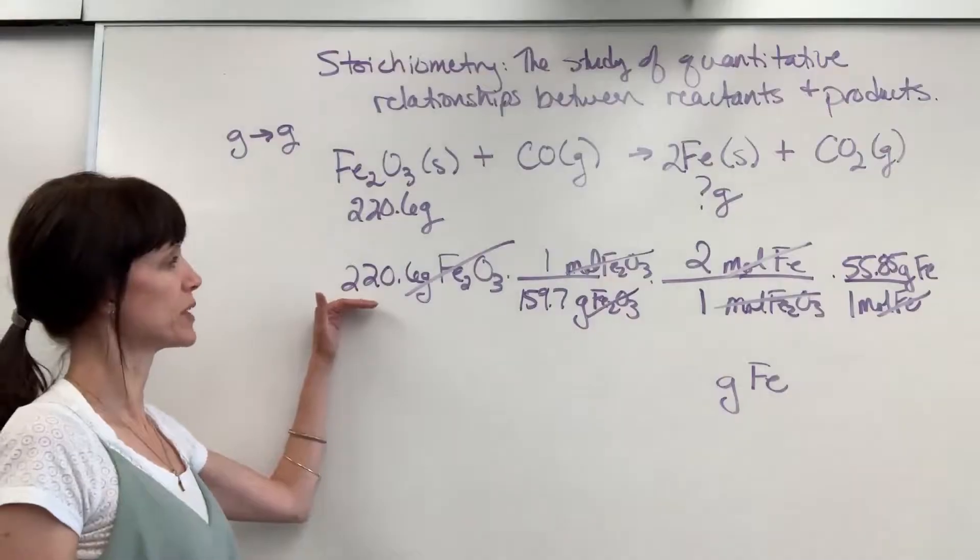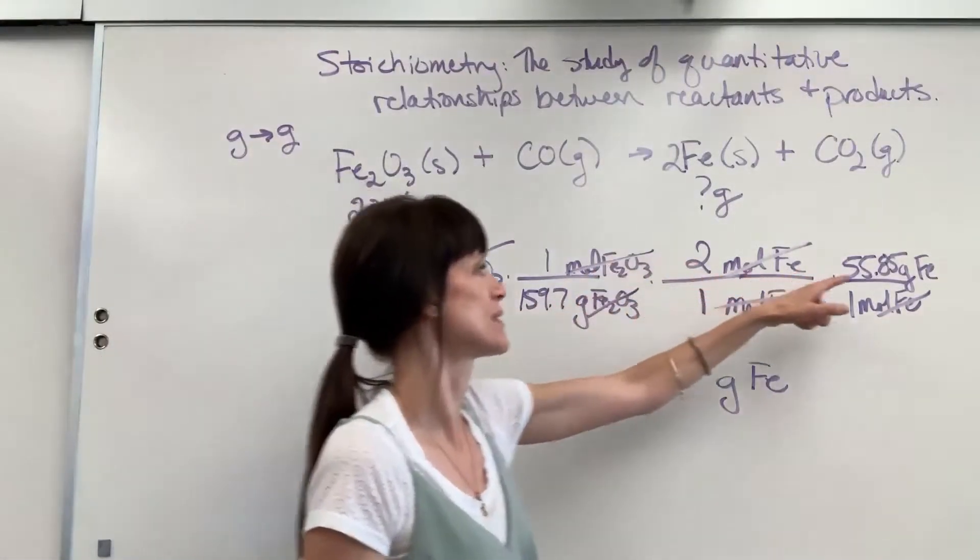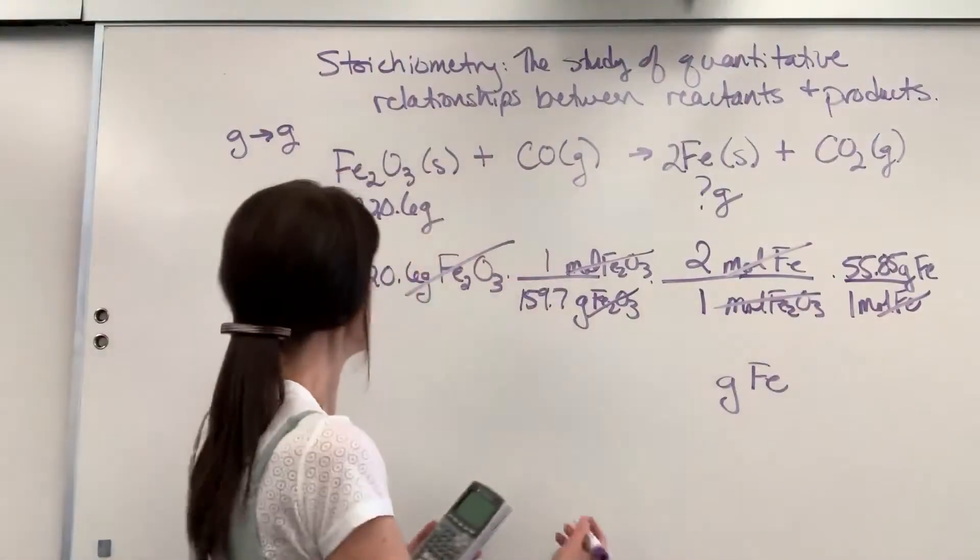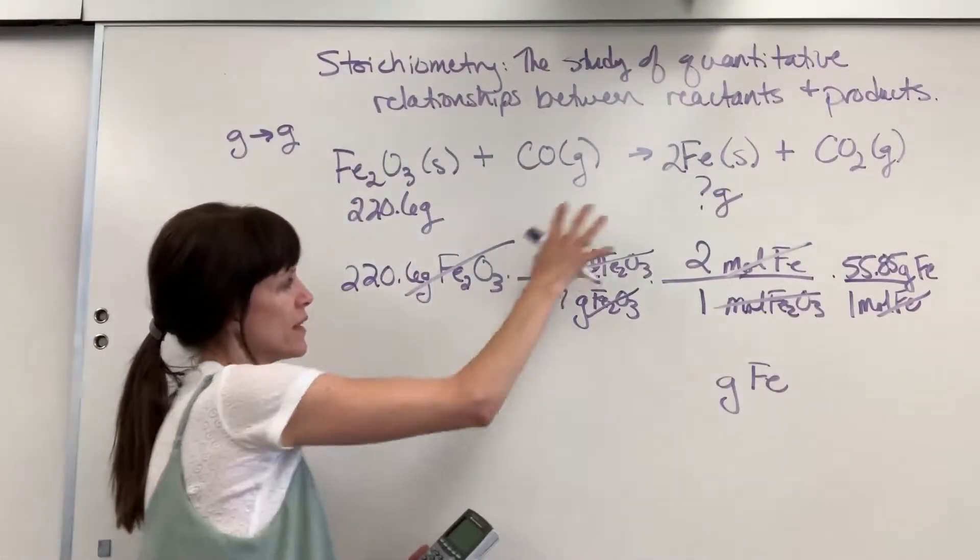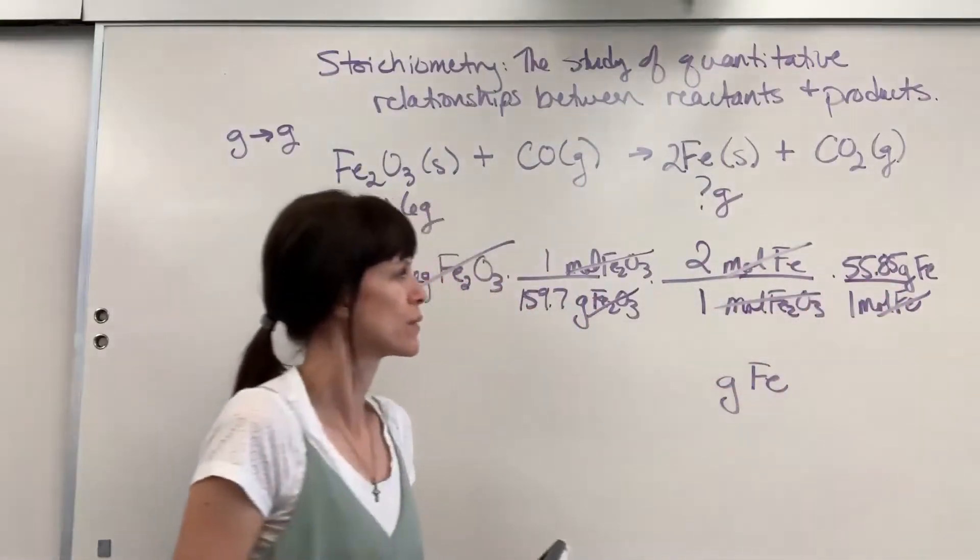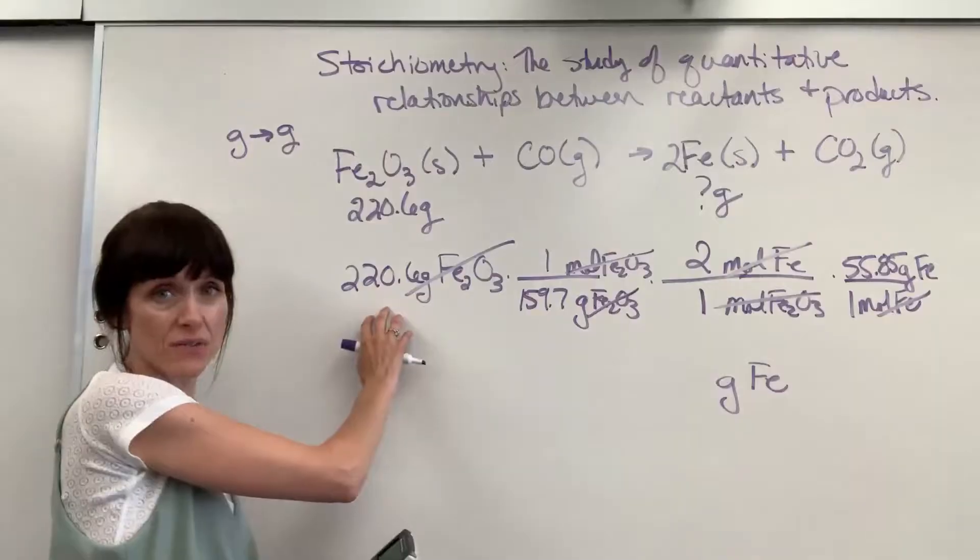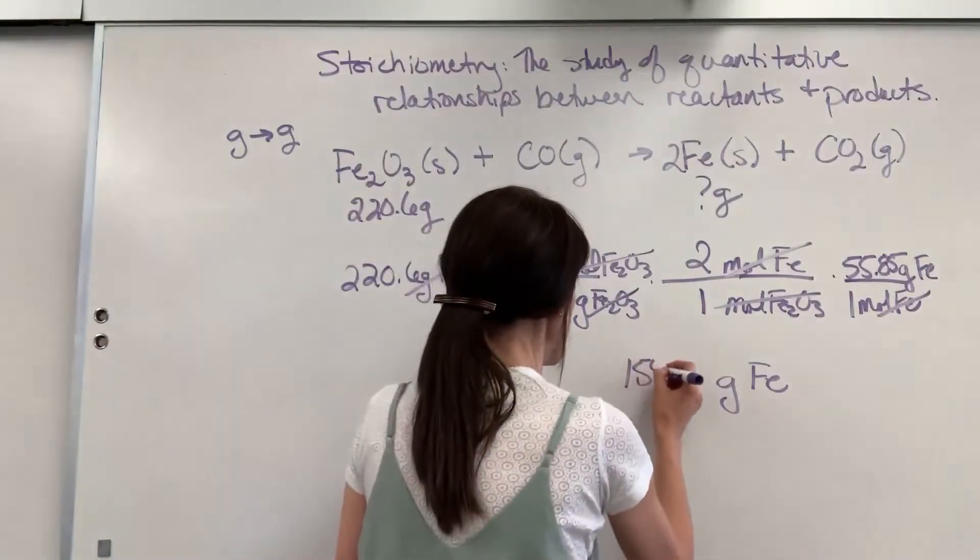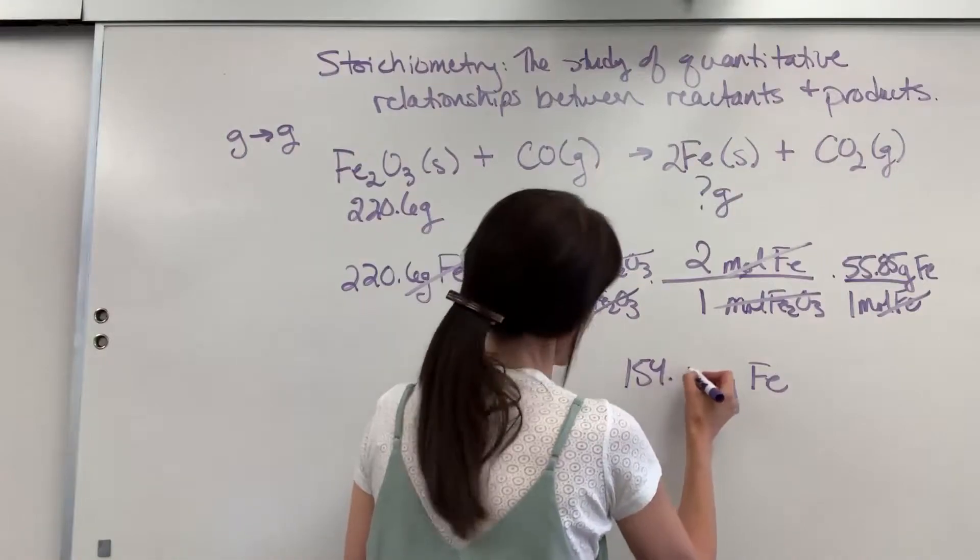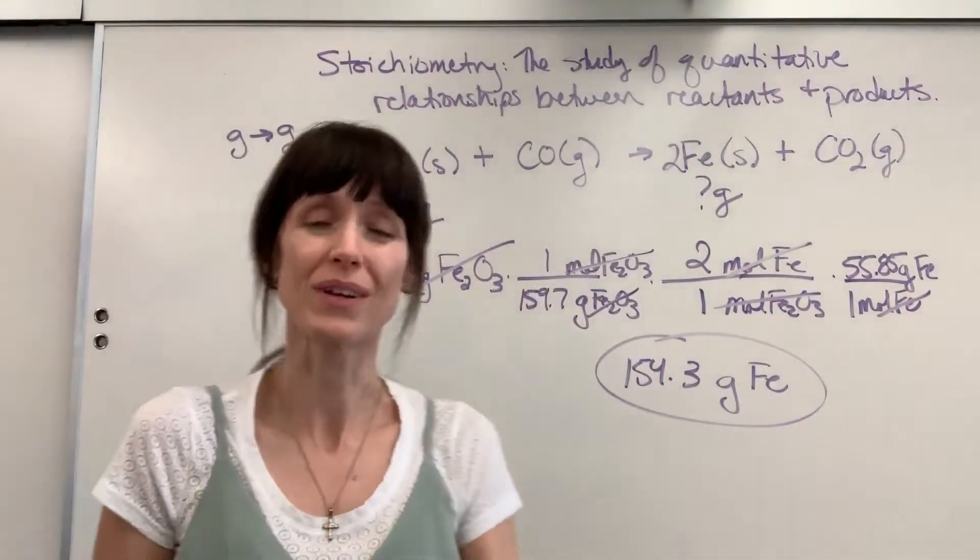we're going to have 220.6 divided by 159.7 times 2 times 55.7. So you've got four sig figs right here. Everything else in the middle here, we're going to consider exact values. Use this for your sig figs. And we will have 154.3. 154.3 grams.